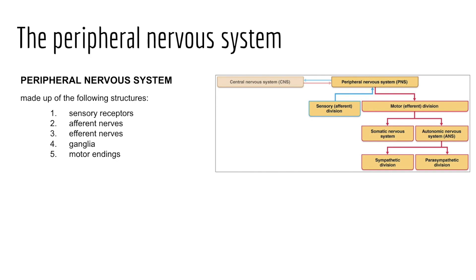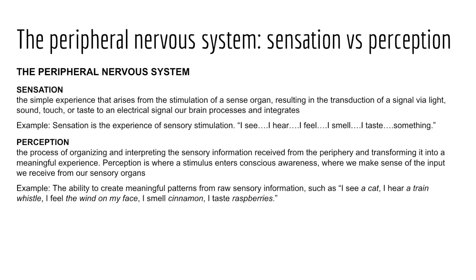We have ganglia — cell bodies of neurons found in the peripheral nervous system. And finally, we have motor endings, which was the topic of chapters 9 and 10 last term. As we spend our week learning about the peripheral nervous system, let's begin by examining and differentiating between two terms: sensation and perception.